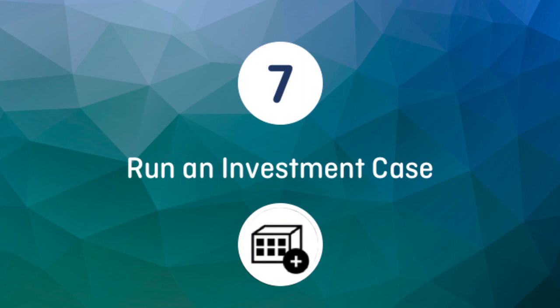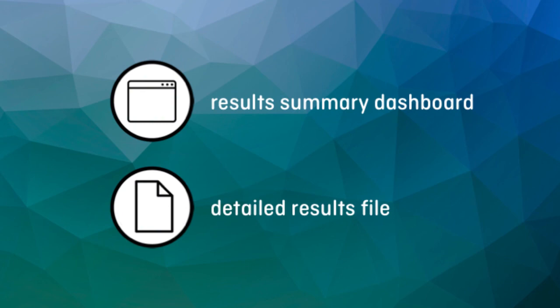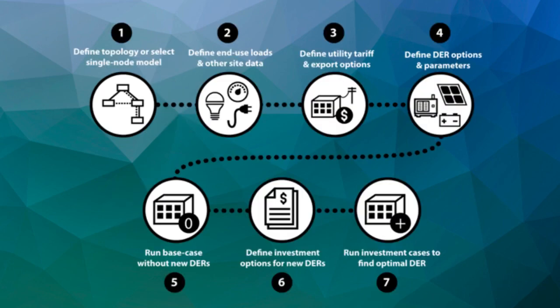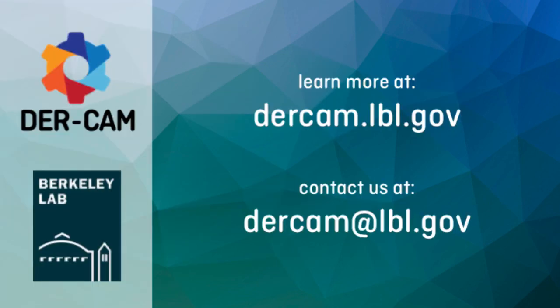Once you are satisfied with your new DER investment options, you need only run the model again. Now the results dashboard will provide you a detailed breakdown of investment and performance metrics for the new optimized design. For more detail, you can also explore the text-based result file produced by the optimization and copied from the DIRCAM server to your local machine. This step concludes the basic DIRCAM workflow. While some of the information presented in this video might feel abstract, it will make more sense as you work through the construction of a model yourself. In the next video, we'll put this workflow into practice by building a simple DIRCAM model. As always, if you have questions on the information presented here, please reach out to us at dircam.lbl.gov.